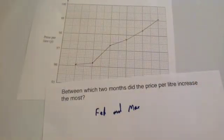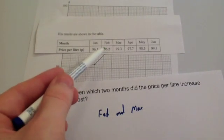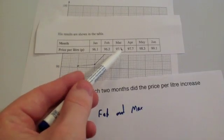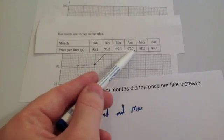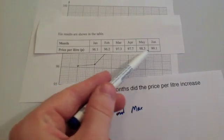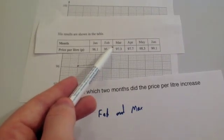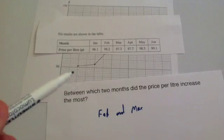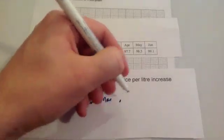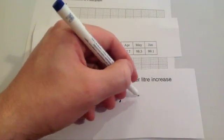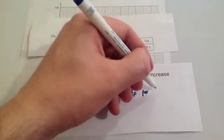If you want to double check with the table, feel free. It increased between January and February by 0.1, between February and March by 1.1, between March and April by 0.4, April to May 0.6, and between May and June 0.8. So the biggest increase was between February and March, an increase of 1.1 pence. You can specify: the increase was 1.1 pence per litre.